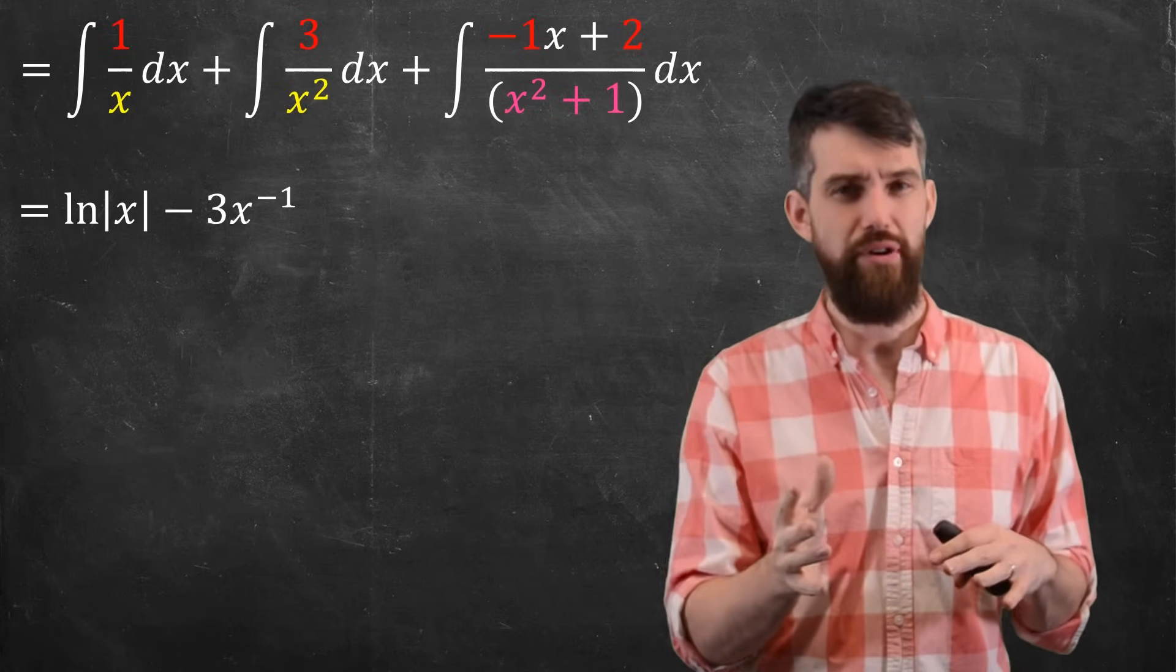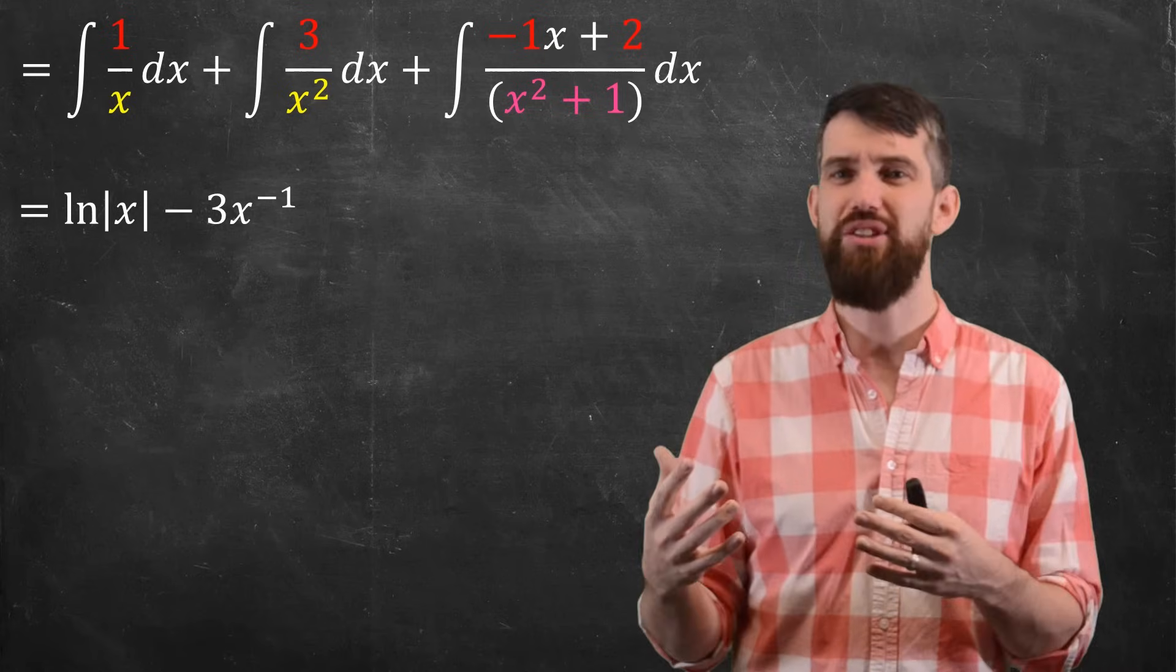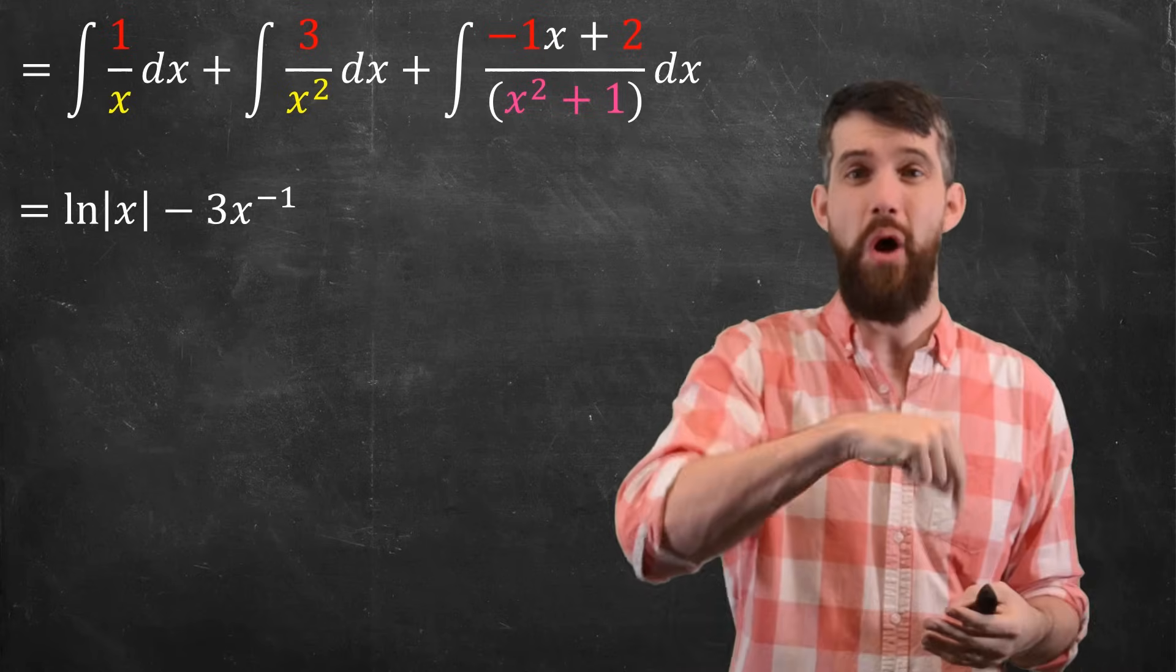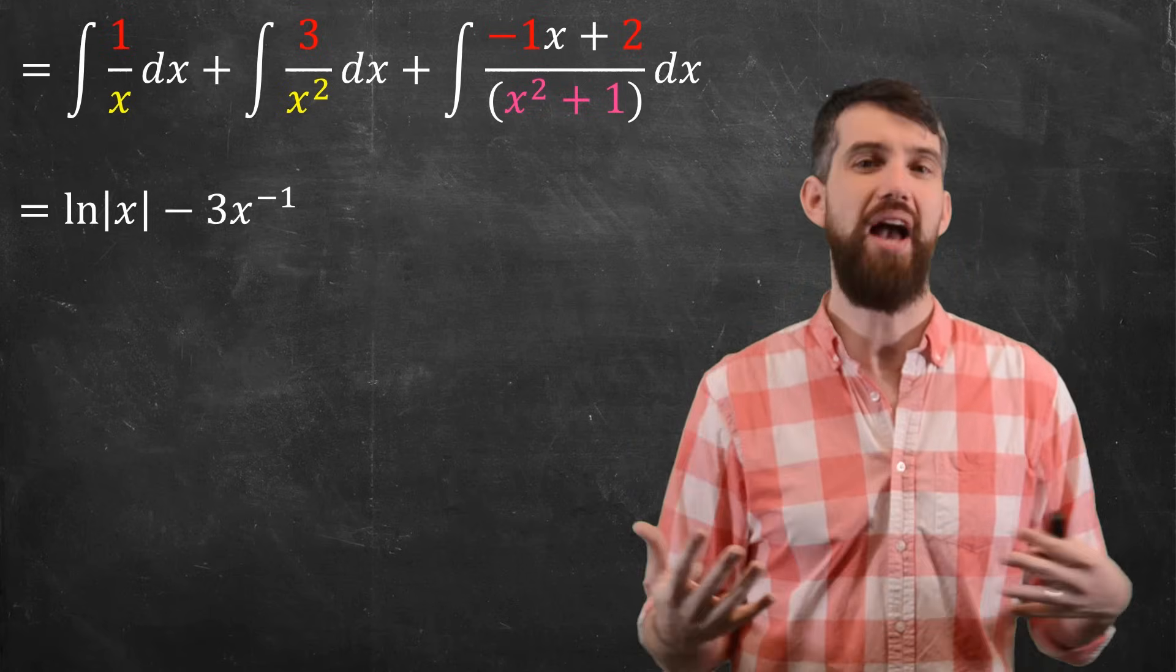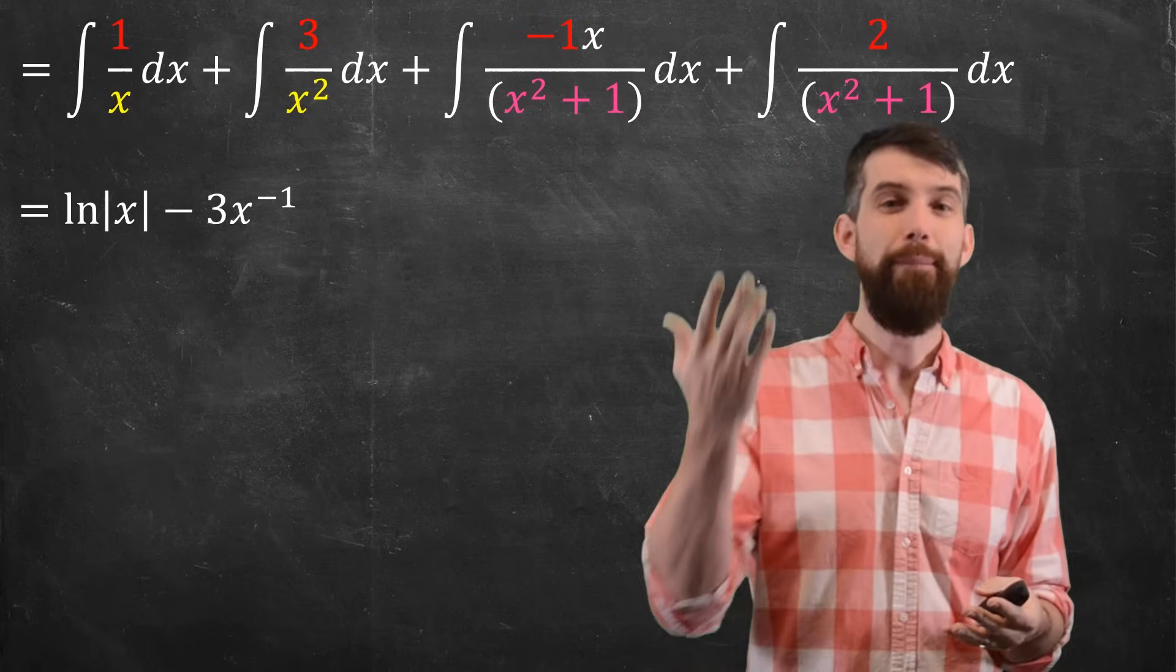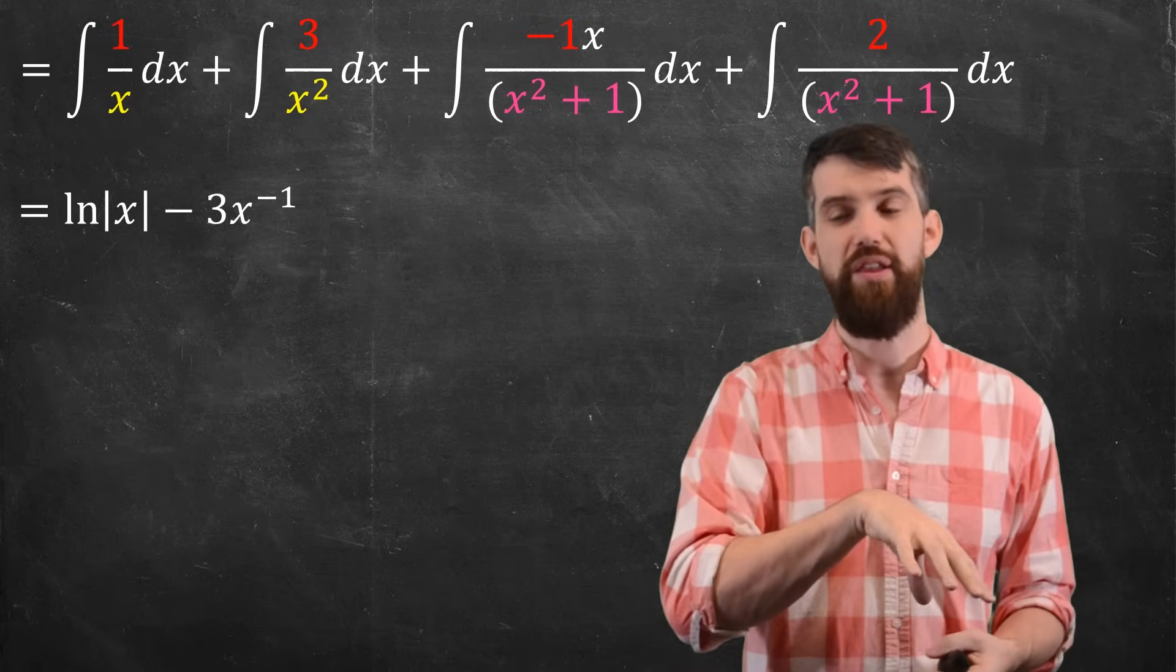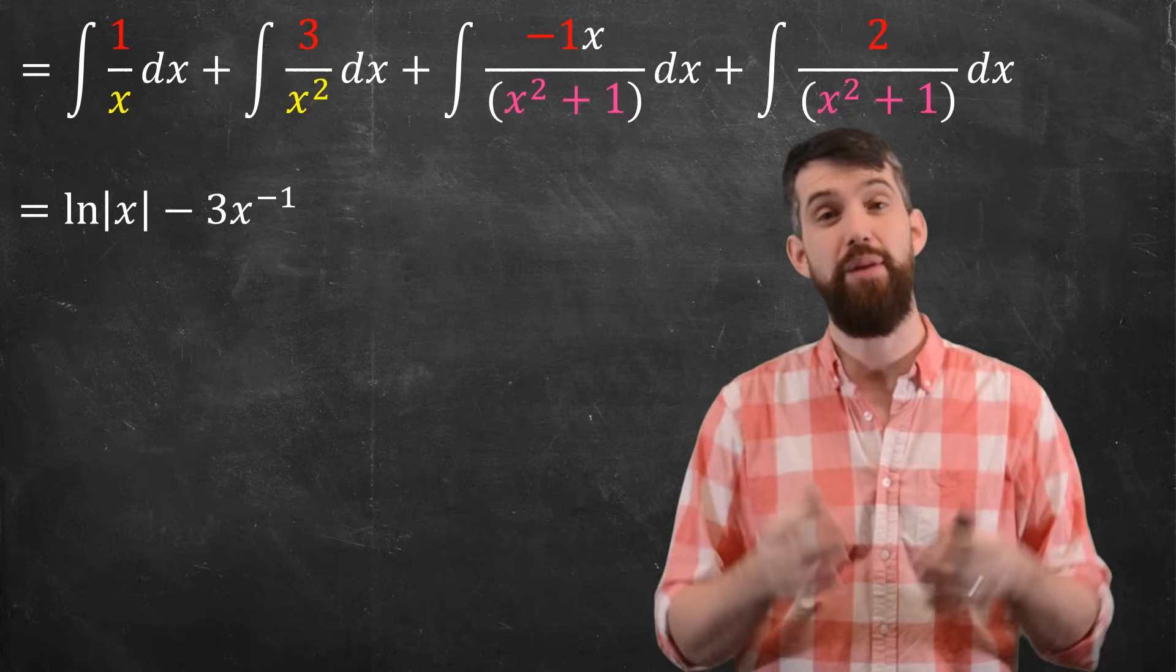Now, the third integral is a little bit more complicated. You notice right off the bat that the sort of obvious u-substitution of the denominator doesn't work out. The du is not the numerator. So one thing I can do is try splitting it up as two different integrals. I get a minus x on the top over this thing on the bottom, and I get a 2 over this thing on the bottom as two separate integrals.